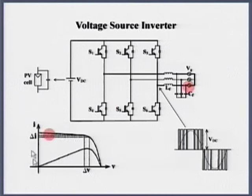Introduction to current source inverter. This is the voltage source inverter - see the devices and see the filter, LC filter, and here is the grid. This is the DC link voltage.